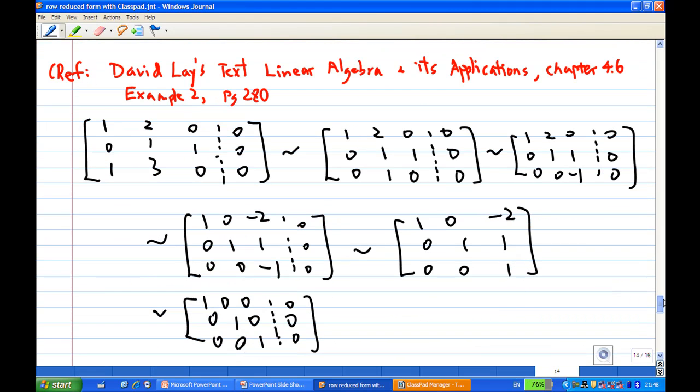Again, we make reference to David Lay's text, Linear Algebra and Its Applications, Chapter 4.6, Example 2, page 280, to figure out any relation between the columns. So we have a matrix formed by the columns w1, w2, w3 and right hand side as 0. We do the row operation.